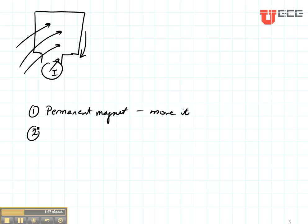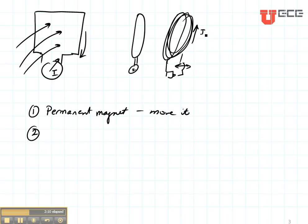A second way that we might change the current in this loop is to set up a second loop. Let's set up one loop right here like this which has our current meter on it. And let's set up another loop or even a set of loops over here with a battery with a switch so that we can open or close the switch of the battery.